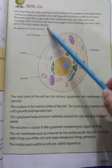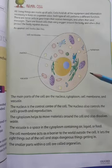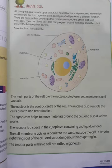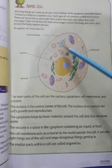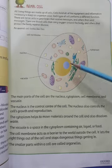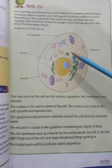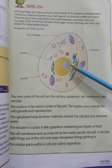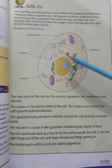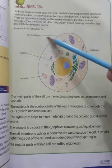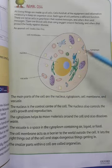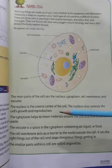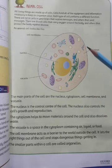An animal cell looks like this — it is shown here enlarged under a microscope, because the cell is very minute. These are the organelles, which are smaller parts within the cell. The outer layer is the cell membrane, and inside are the nucleus, vacuole, and cytoplasm.